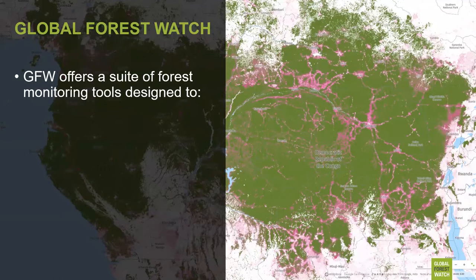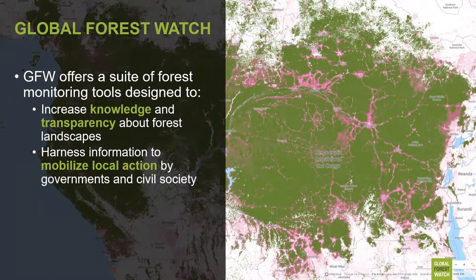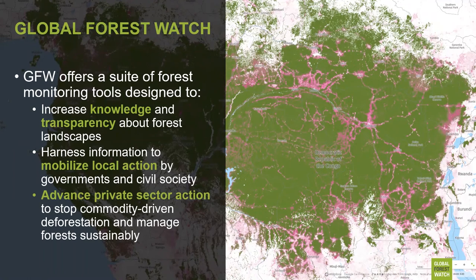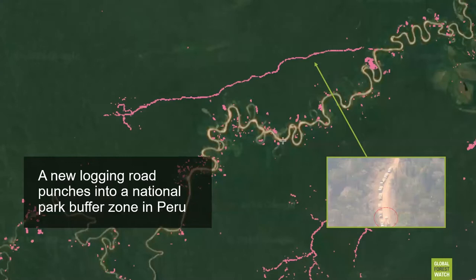Some high-level examples of how this is done include increasing knowledge and transparency about forest landscapes — Global Forest Watch tools and data offer access to the state of the world's forests to everyone, everywhere, for free. Other examples include harnessing information to mobilize local action by governments and civil society, and advancing private sector action to stop commodity-driven deforestation. One tool, GFW Pro, allows the private sector to measure risk associated with their supply chains.